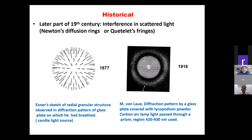In the book Optics by Newton there is a mention of these. In 1877, a scientist called Exener made a sketch of this radial granular structure, in which he used candlelight as a source and took a glass plate on which he breathed, providing scattering centers. In 1916, von Lau obtained this diffraction pattern using a plate covered with lycopodium powder and a carbon arc as a light source to illuminate the plate, using the 420 to 430 nanometer region of the spectrum.